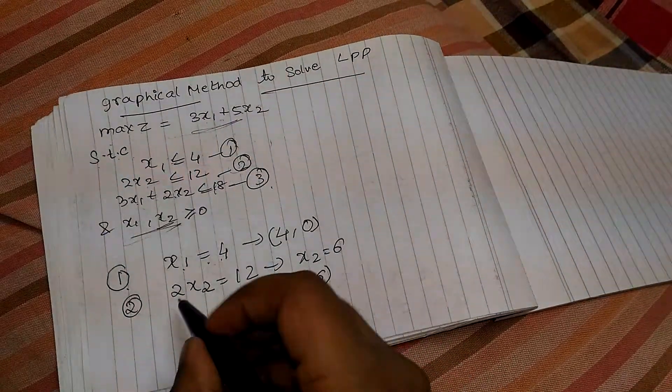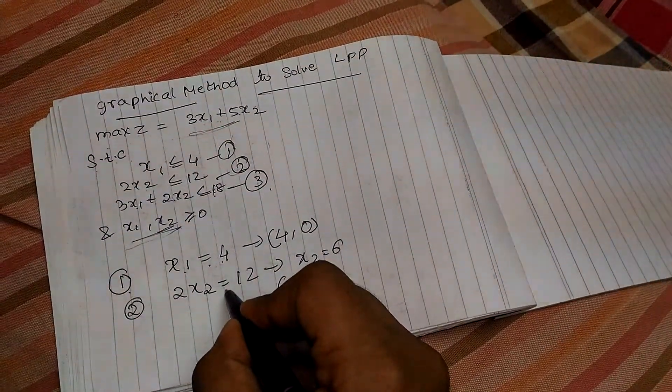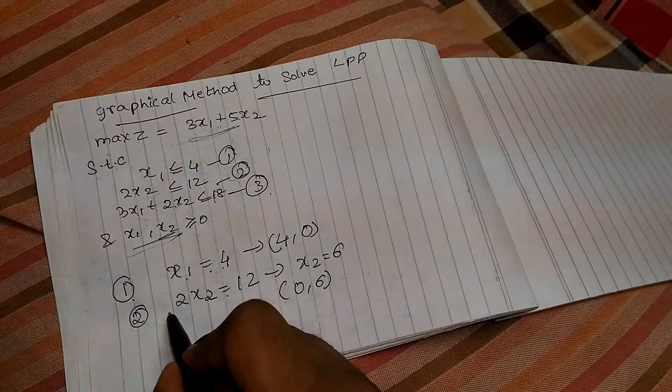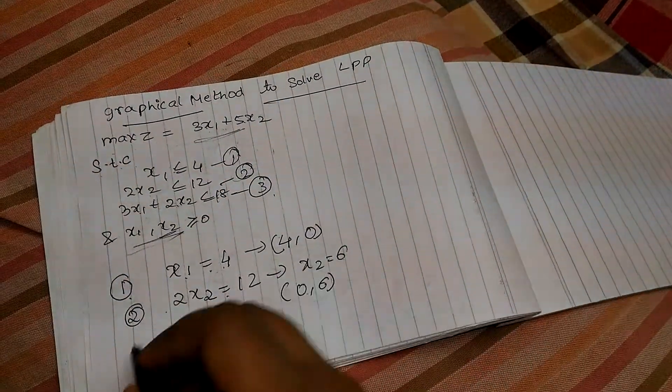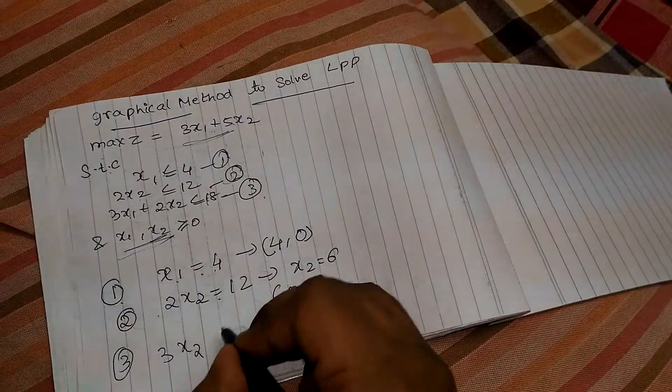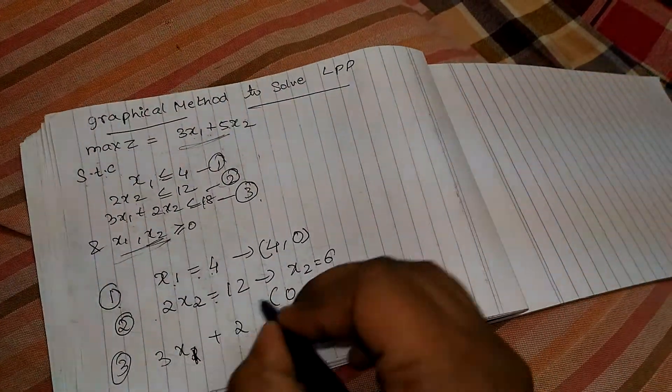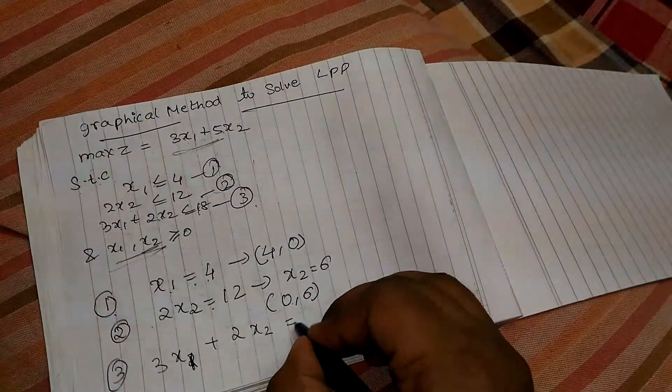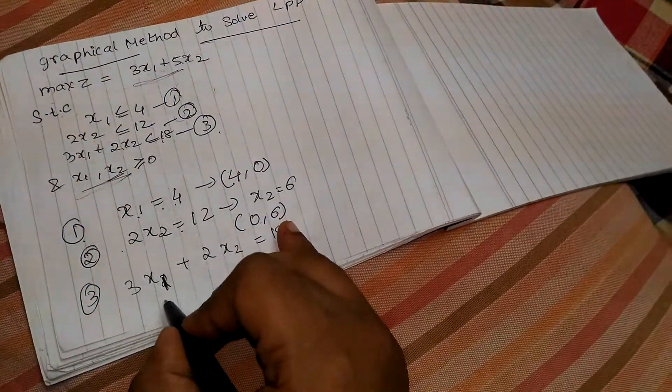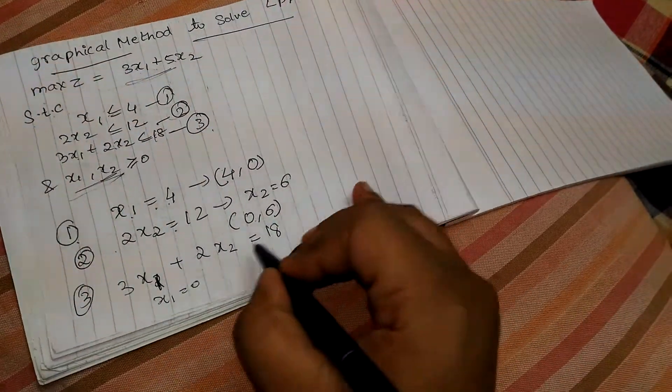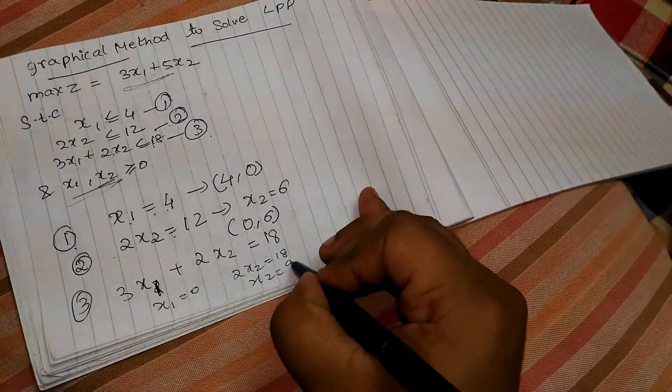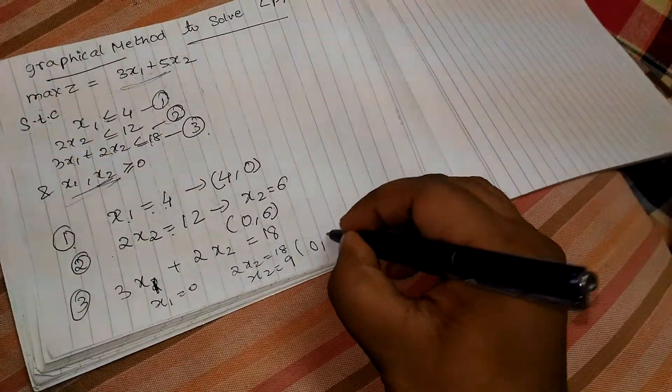And second equation we can write as 2x2 equal to 12, x2 equal to 6. And here there is no x1 term, so we will write it as 0, 6. And third equation can be written as 3x1 plus 2x2 equal to 18. Here we can't write it directly, so first we will put x1 equal to 0 here. That becomes 2x2 equal to 18, x2 equal to 9. This forms a point 0, 9.